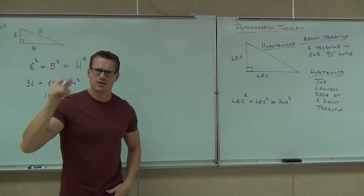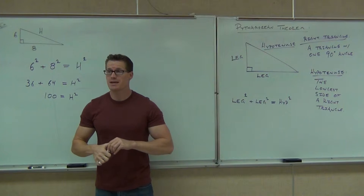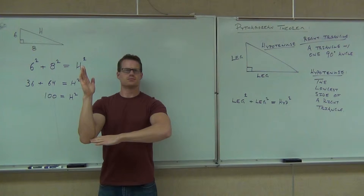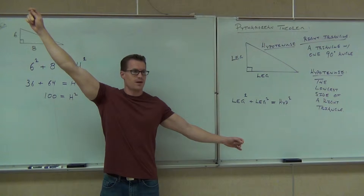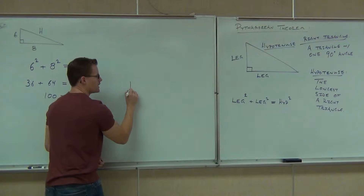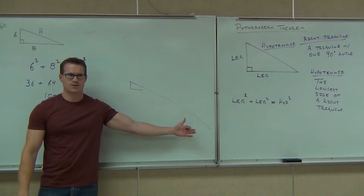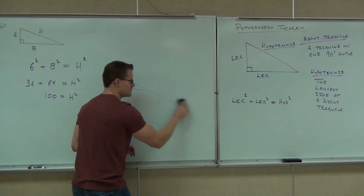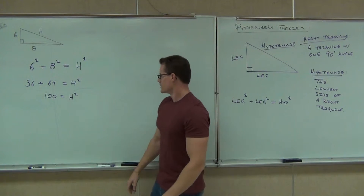Wait a second — is the hypotenuse 100? Well, that doesn't make sense. Think about this: if you have a roof with 6 feet and 8 feet, and I said the hypotenuse is 100 — 100 is way, way too long. It would be like having a 6-foot side, an 8-foot side, and a 100-foot side. That's a little bit long for an overhang. It wouldn't be supported and would fall right off or warp. So no, it's not going to be 100.